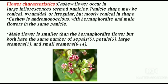Flower characteristics of cashew. Cashew flowers occur in a large inflorescence termed panicles. Panicle shape may be conical, pyramidal, or irregular but mostly conical in shape. Cashew is andromonoecious with hermaphrodite and male flowers in the same panicle. Male flowers are smaller than hermaphrodite flowers, but both have the same number of sepals — 5, petals — 5, large stamens — 1, and small stamens — 1.